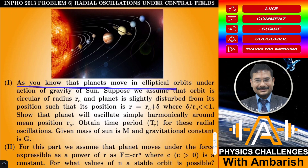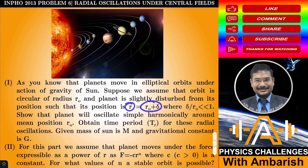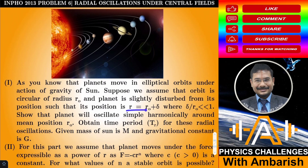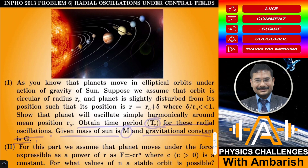As you know, planets move in elliptical orbits under the action of gravity of the Sun. Suppose we assume the orbit is circular of radius r₀ and the planet is slightly disturbed from its position such that its position r is given as r₀ plus delta. At t equals 0, you give it a slight flick, where delta/r₀ is much much less than 1. Show that the planet will oscillate simple harmonically around the mean position r₀ — that is, the distance of the planet from the Sun varies simple harmonically. We also have to find the time period for these radial oscillations given the mass of the Sun is capital M and the gravitational constant is capital G.